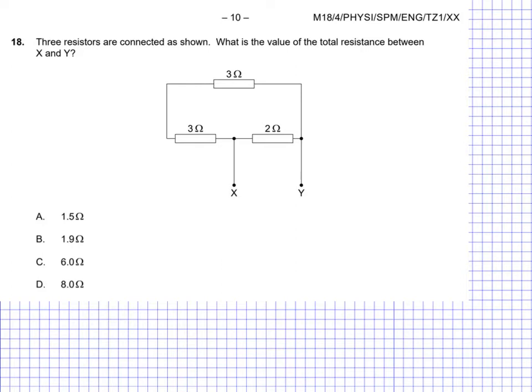Question 18 here is a circuit set up with three resistors, nothing else in the circuit. We're asked to find the value that we would get if we were to measure the resistance at X and Y. So essentially, we need to think about a couple of things.